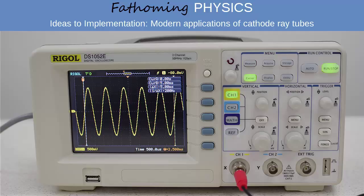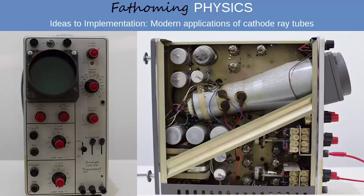Oscilloscopes are devices designed to measure how a voltage changes over time. Modern digital oscilloscopes utilise LCD screens to display this information. Before digital oscilloscopes, cathode ray tubes were used in oscilloscopes to produce the display.